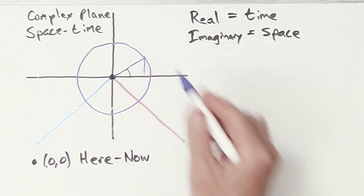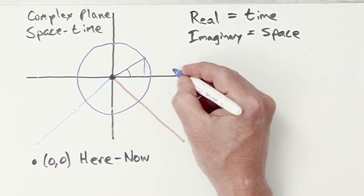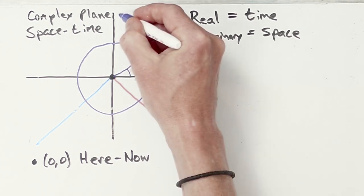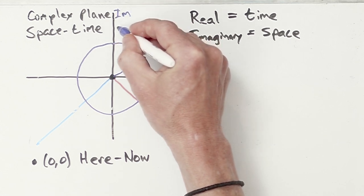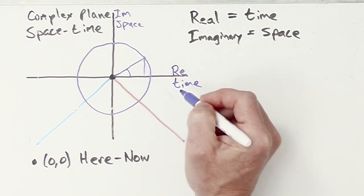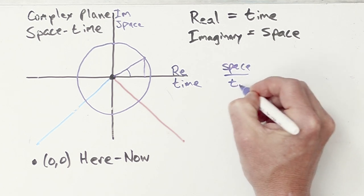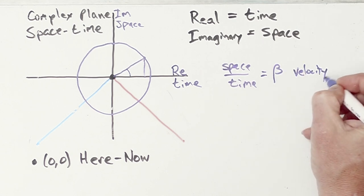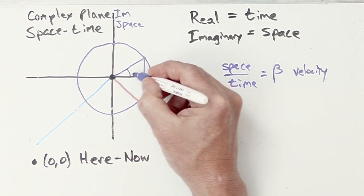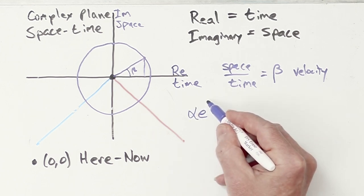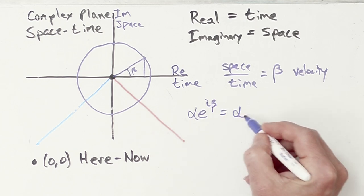Now, when we treated this as a spatial thing, it was natural to think about angles. But now that this is the real and therefore time, and this is the imaginary and therefore space, this ratio of space to time is a velocity.